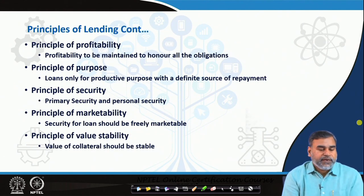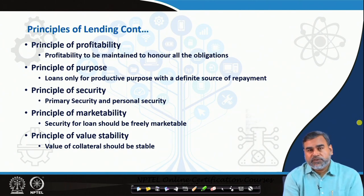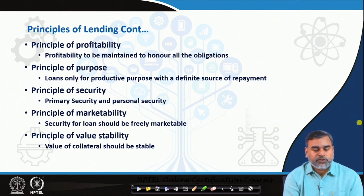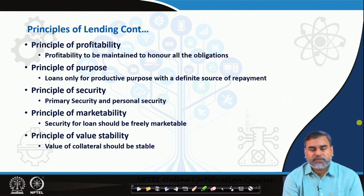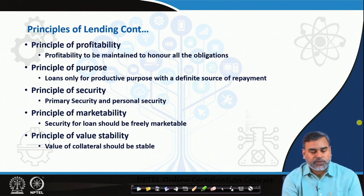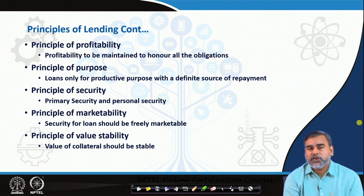Then we have the principle of profitability. Profitability has to be maintained and the loan should be sanctioned only on the basis of certain productive use and purpose, and there should be a guarantee that a definite source of repayment exists. Different kinds of assets used as security include primary security — for example, for a vehicle loan, the car is the primary security — and personal security related to guarantees, though mostly primary securities are dominating in the market.